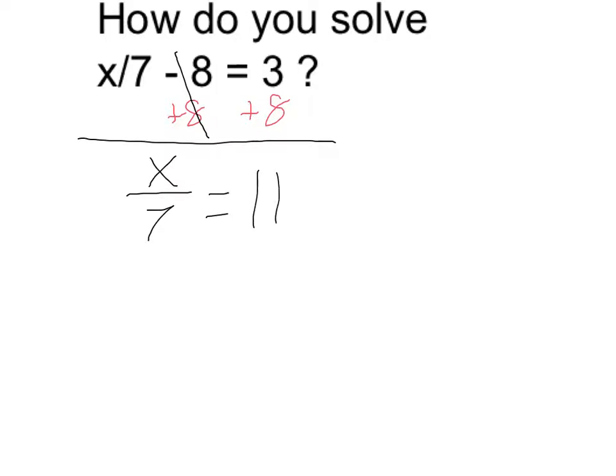Now, to undo the division by 7, what I'm going to do is multiply by 7. I'm going to multiply both sides of my equation by 7, canceling out on the left, leaving me with x, and on the right I get 77. Therefore, x is equal to 77.